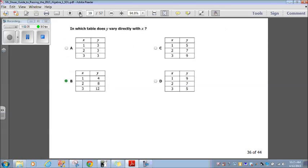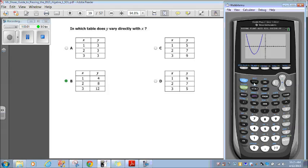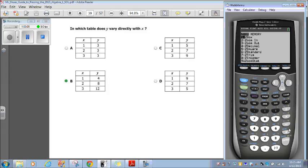Let's go on to question 36. In which table does y vary directly with x? So y equals kx. So it's going to be upward here. Now, you should be able to just look at it and see. But if you can't do that, we can go through them individually. Here, 1, 3, 2, 3, 3, 3. Let me just clear this out here. Now, 1, 3, 2, 3, 3, 3, that's just a straight line going across the y. That's not anything varying.